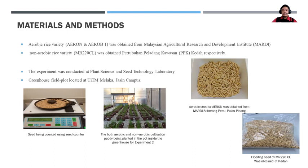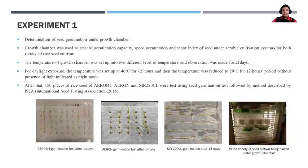These are several pictures showing the aerobic variety and non-aerobic variety. For Experiment 1, seed germination was determined under a growth chamber. The growth chamber was used to test germination capacity and vigor index. The varieties were set up under 12 hours of 40 degrees Celsius in daylight and 28 degrees Celsius to indicate night mode.